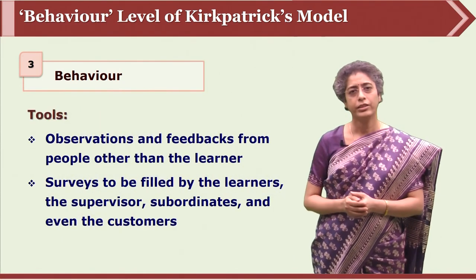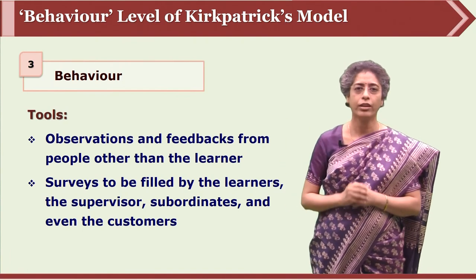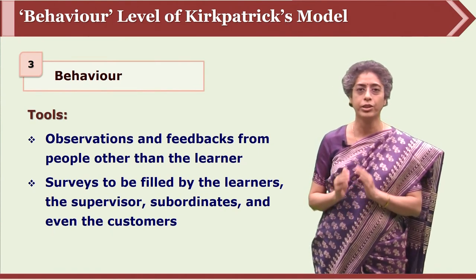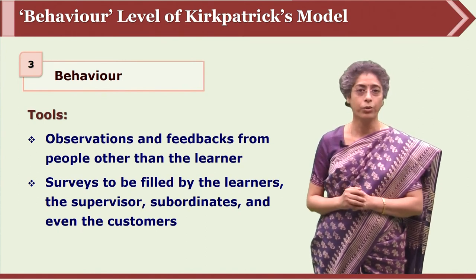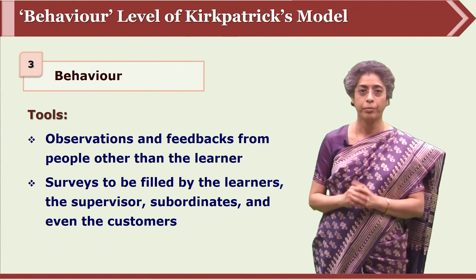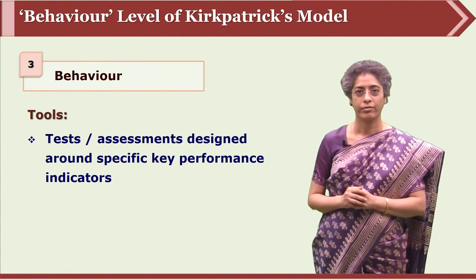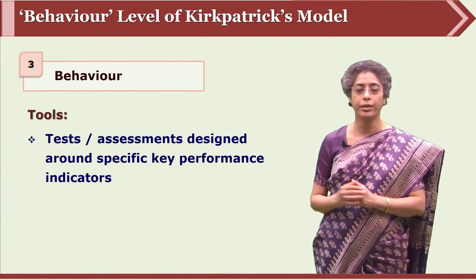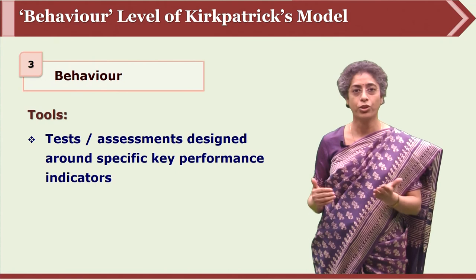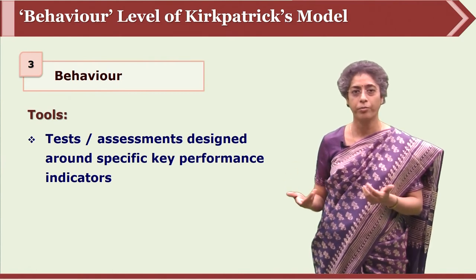When evaluating a trainee at the Behaviour level, we don't only depend on the learner filling up a survey — we use feedback forms and surveys filled by persons other than the trainee. All kinds of stakeholders can provide input: immediate mentors, bosses, employers, and peers. They evaluate on the basis of that person's behaviour on the job using key performance indicators, which reflect how the person functions, works, and performs their job — effectively or not.